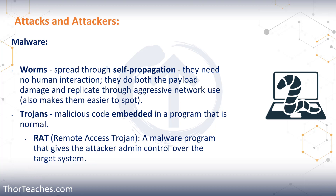We look for attachments that look wrong and block websites that could have malicious traffic. On the administrative side, we give users training, raise their awareness, and change their behavior so they know not to click on that link. One type of Trojan we're seeing more of now is RATs — Remote Access Trojans — where the Trojan gives the attacker admin access over the infected system.